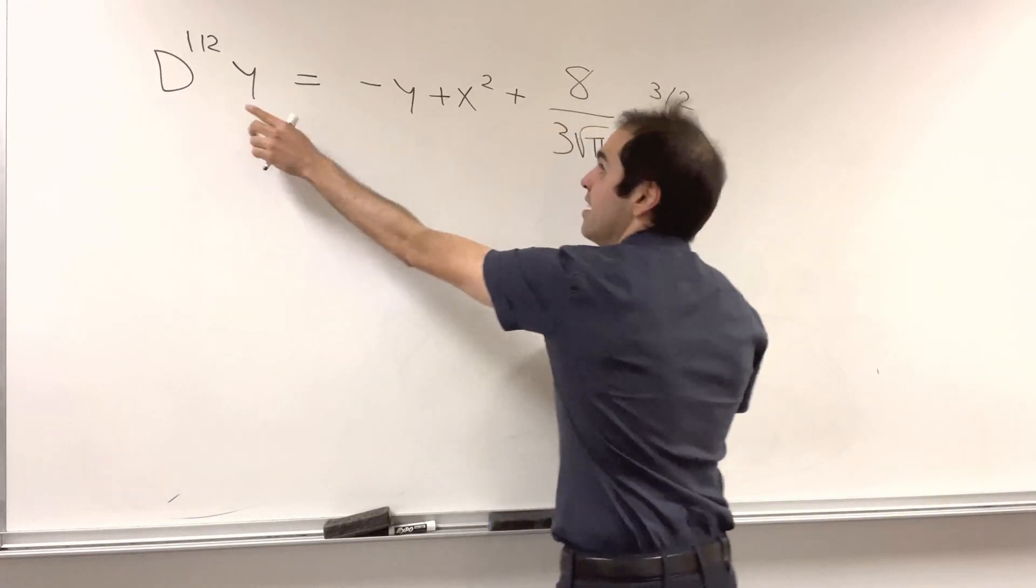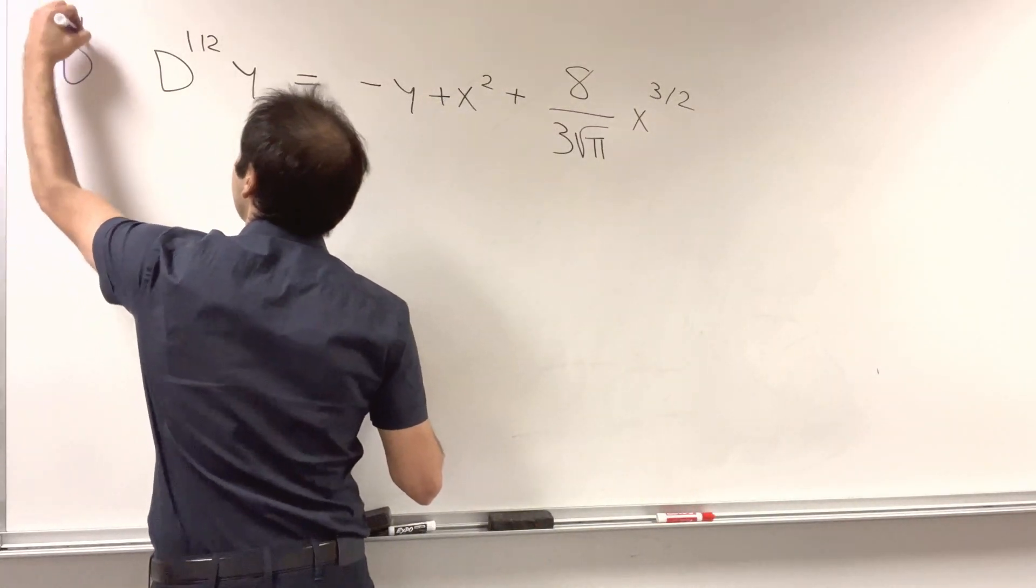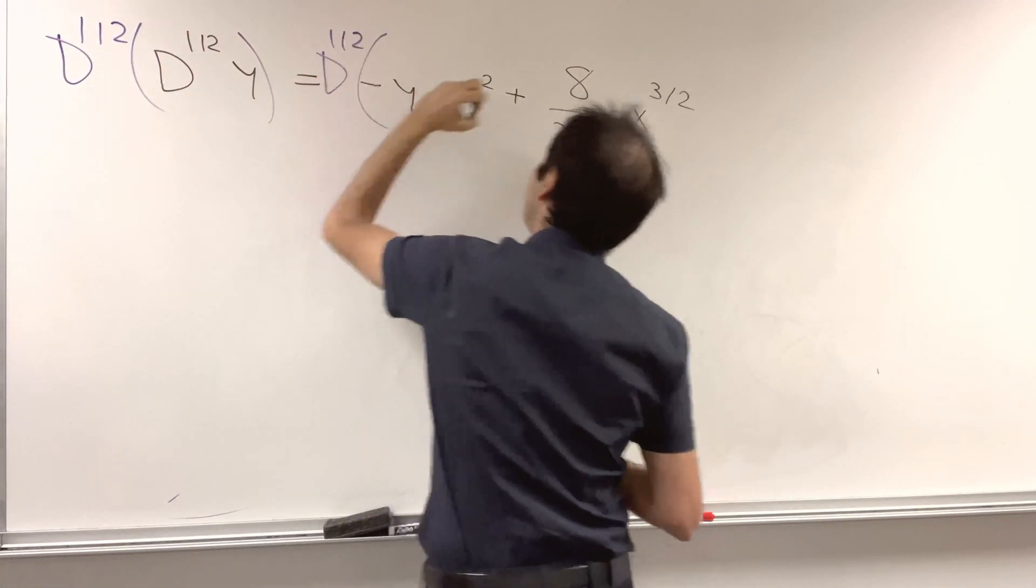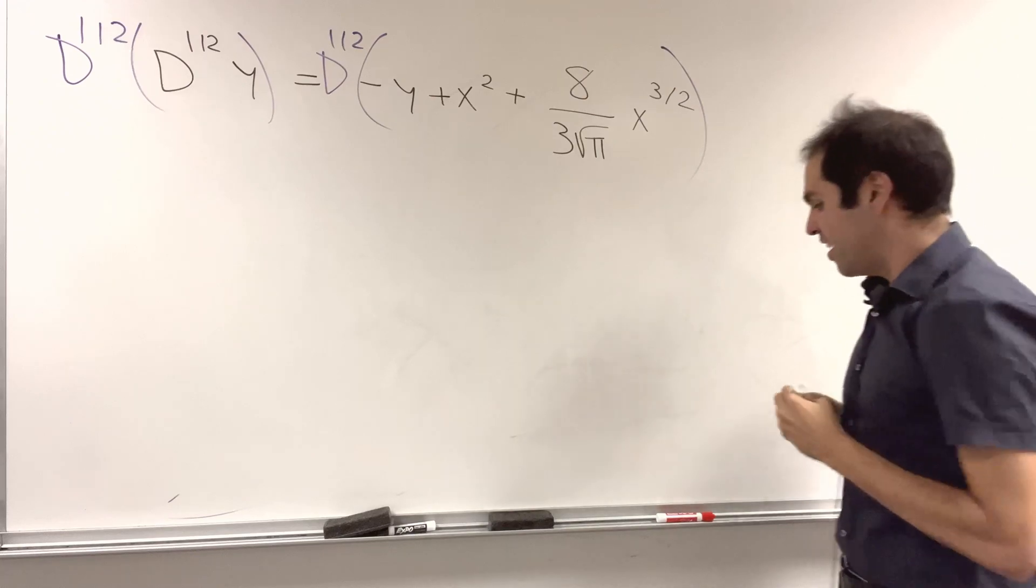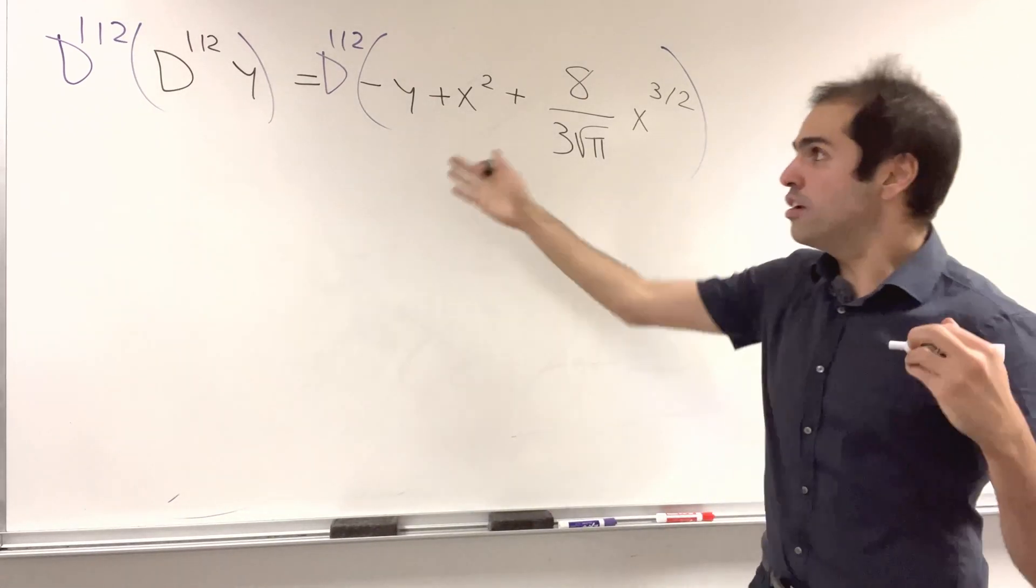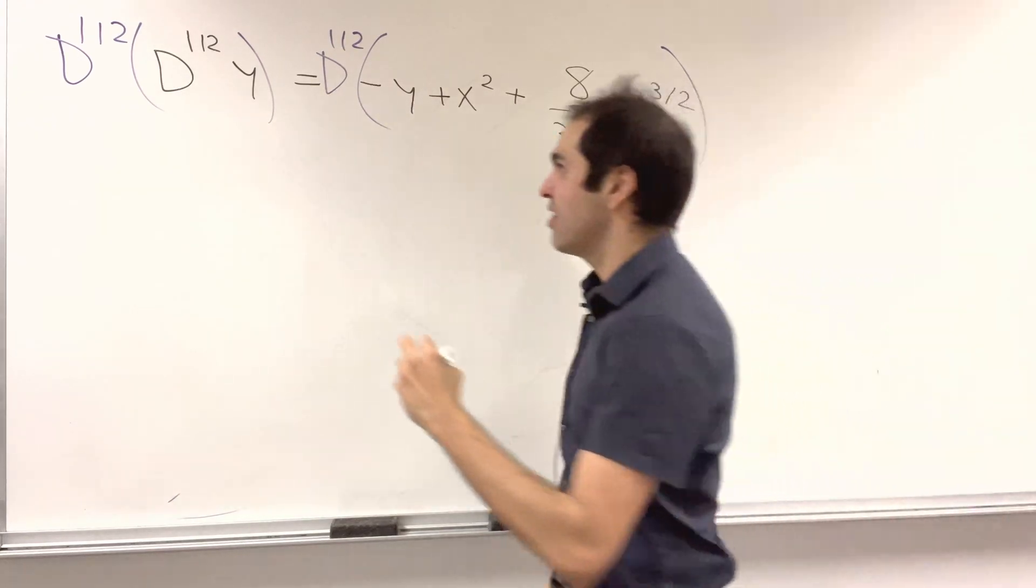Because here we have a half derivative of y, well let's just apply another half derivative to it and see what we get. So d^(1/2) of the left hand side is d^(1/2) of the right hand side. And then the beautiful thing is the half half derivative is just a regular derivative.